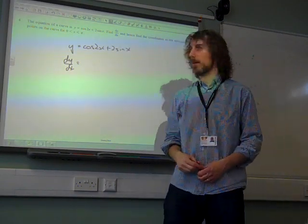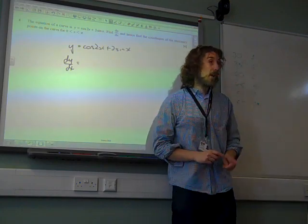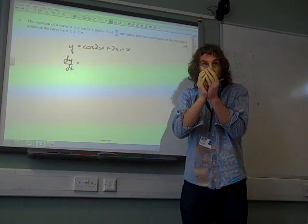Okay, question 4, take 2. So I've written the equation out, this is what we're supposed to be doing, we're differentiating it. The 2 there is important, it's cos of 2x.